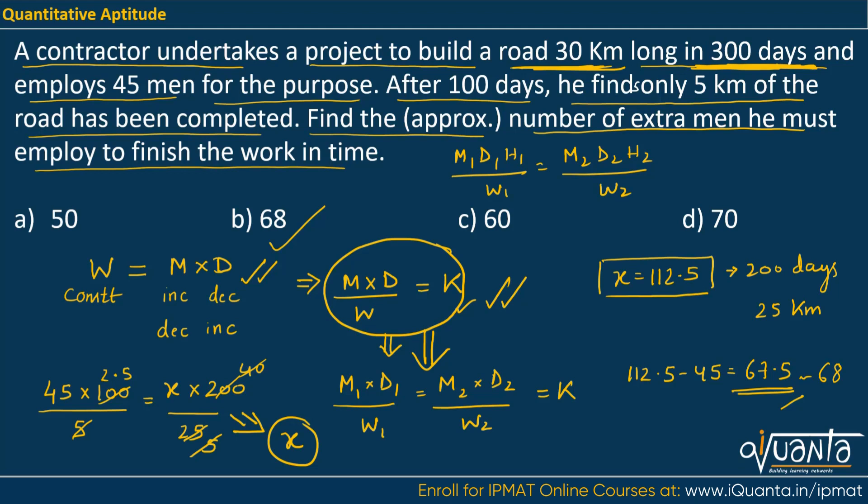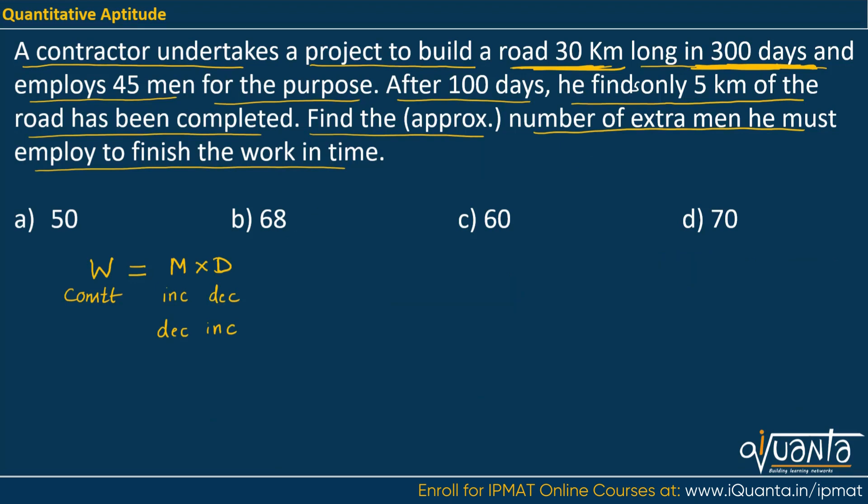Some people might want another solution that is through the number of man days. So let us discuss that as well. We were given that 45 men were employed. They worked for 100 days and they were able to build 5 kilometer of the road. So if I ask you in how many days will they build 1 kilometer of the road? So number of men will still be the same 100 upon 5. That means if 45 men work for 20 days they will be able to build 1 kilometer of road.